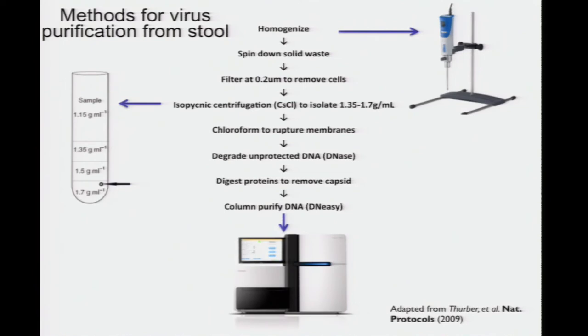Our protocol involves taking stool, homogenizing with several filtration steps, then either purifying by banding in cesium chloride or Centricon ultrafiltration, then chloroform to rupture membranes, degrading unprotected DNA with DNase to get rid of contaminating DNAs, then breaking open the capsids to get out the DNA from inside the viral capsids, and then either 454 or HiSeq metagenomic sequencing.